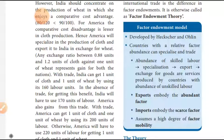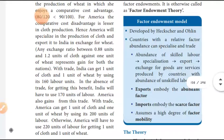With trade, India can get one unit of cloth and one unit of wheat by using 160 labor units. Without trade, India would need 170 labor units for the same goods. The cost advantage amounts to 120 units — India gains the opportunity to save labor by engaging in trade.